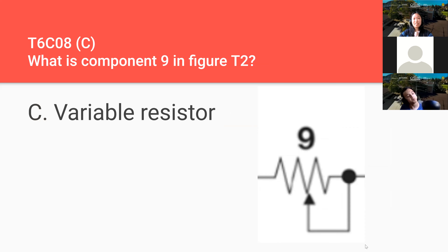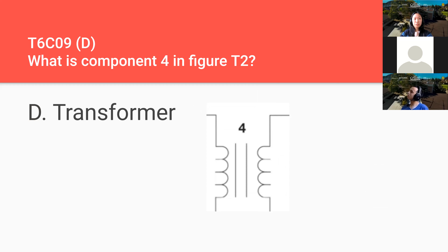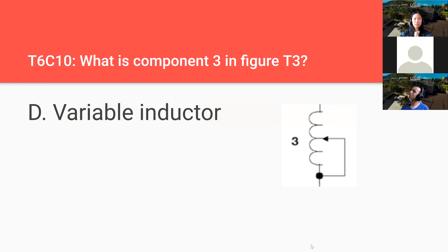What is component nine in figure T2? That is a variable resistor. We also use this for potentiometers since potentiometers are variable resistors — think of moving the arrow back and forth. What is component four in figure T2? A transformer. What is component three in figure T3? A variable inductor.